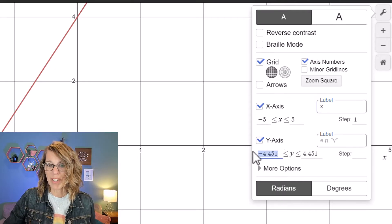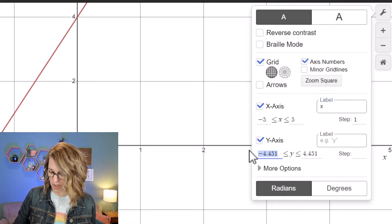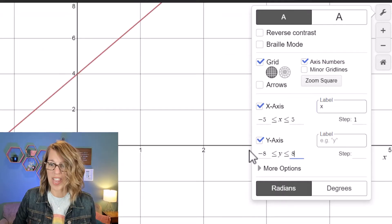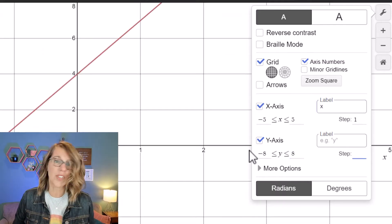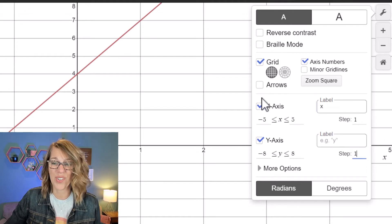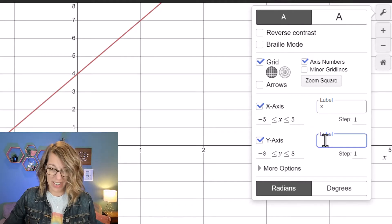Now for the y-axis let's do something similar. I want to change this to go from negative 8 to 8 and I want that step also to be 1 instead of 2. And you can label this one if you want.